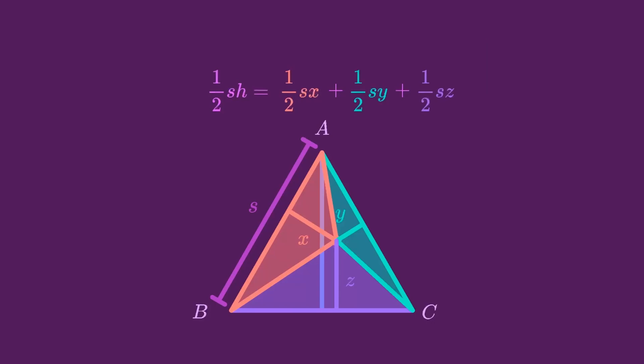And that's pretty much all we need because when we factor out one half S and cancel it from each side, it leaves us with H equals X plus Y plus Z.